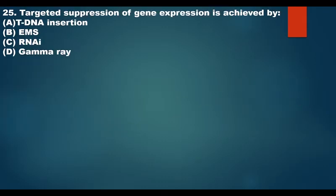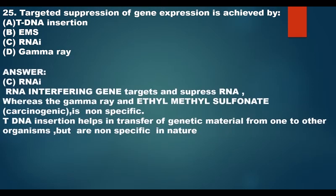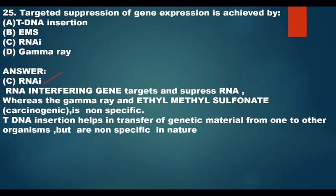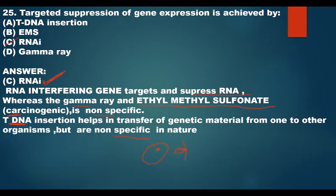Targeted suppression of gene expression is achieved by RNAi — RNA interference. RNAi targets the RNA so protein is not produced, thereby silencing the gene. Other options like gamma rays and EMS (ethyl methyl sulfonate) are non-specific mutagens, and T-DNA insertion from Agrobacterium tumefaciens transfers genetic material non-specifically. RNAi is the specific targeted option.